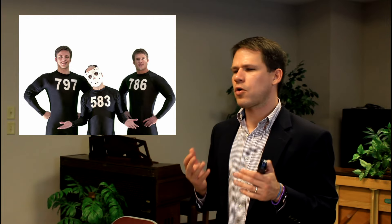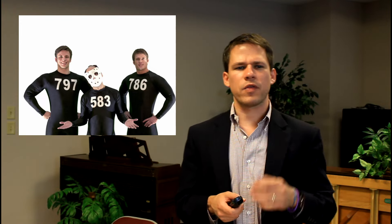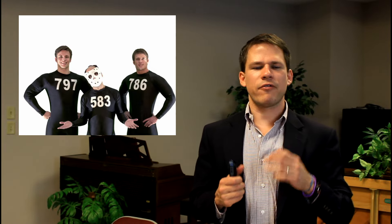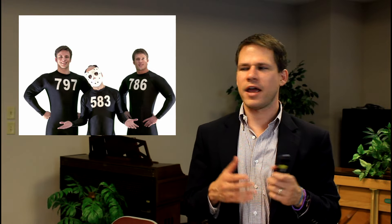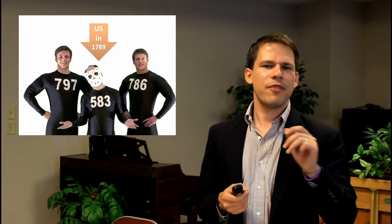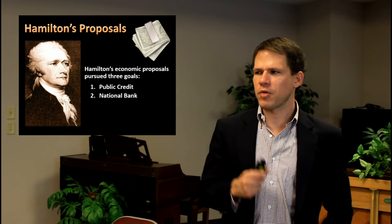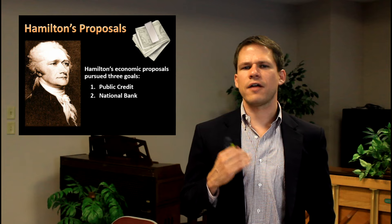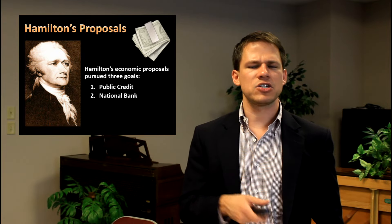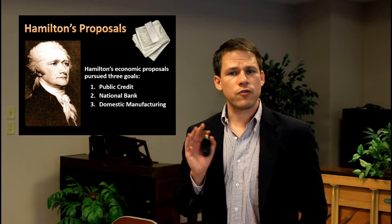Hamilton was more concerned about public credit and developing industry and banking in the United States. Think of those credit score commercials — the United States in 1789 was like the short guy with the lower credit score. Hamilton had three goals: first, establish public credit so that U.S. debts meant something; second, create a national bank to manage debt and the economy; and third, encourage domestic manufacturing — whereas Jefferson had no interest in any of this.